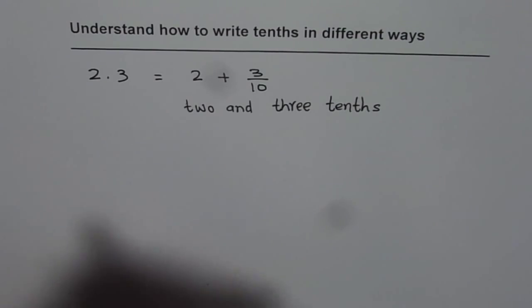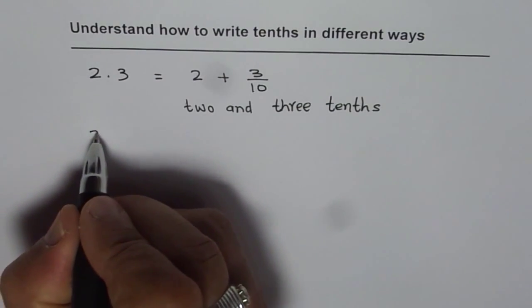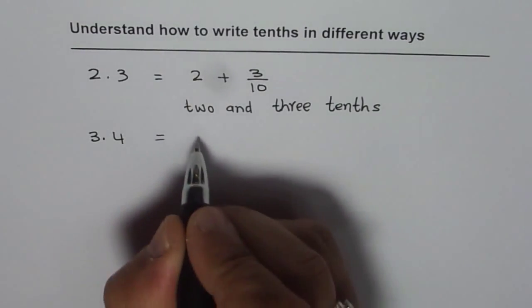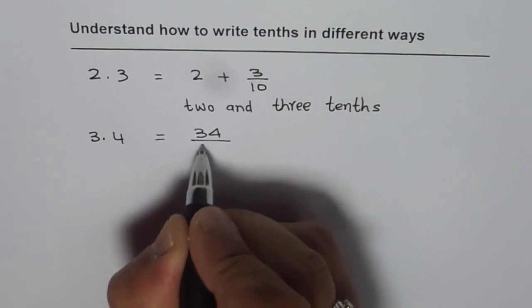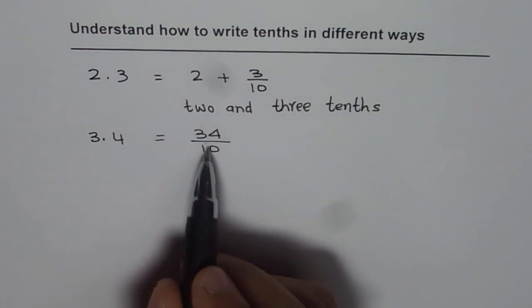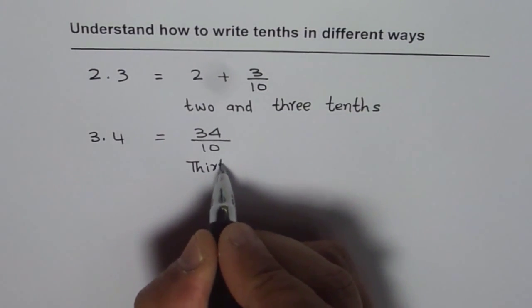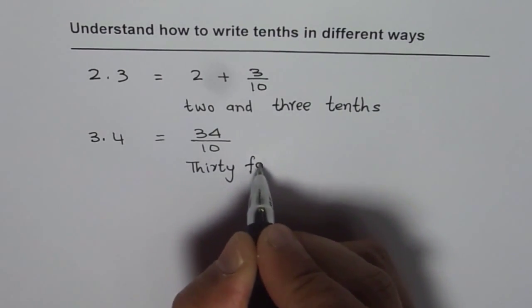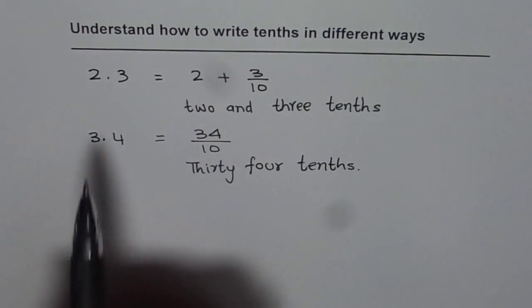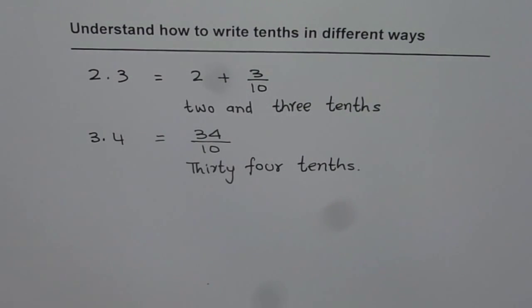Another way—let me take another similar example but with different numbers. Let's say we take 3.4 this time. I could write 3.4 as 34 divided by 10. If I write it like this, I can describe this as 34 tenths. So do you see how decimal numbers can be described in different ways?